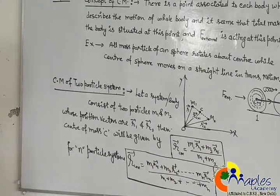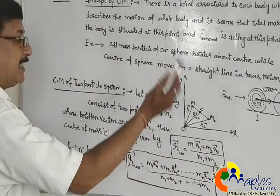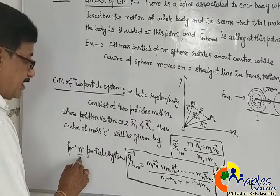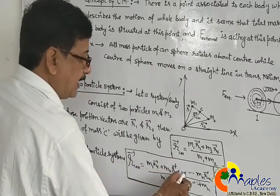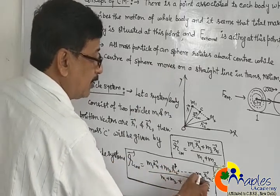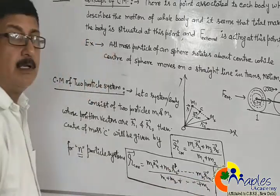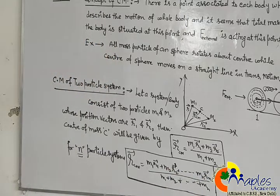This is the expression for the center of mass. If the body consists of many particles, for an N particle system, it becomes R_CM equals (M1 R1 plus M2 R2 plus M3 R3 up to MN RN) upon (M1 plus M2 plus M3 up to MN).